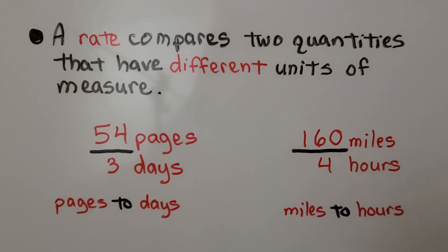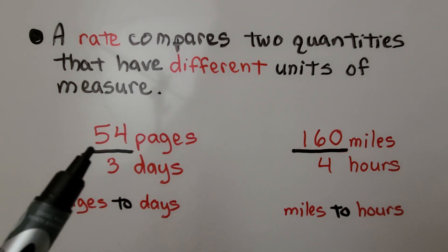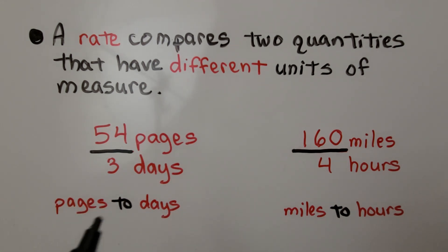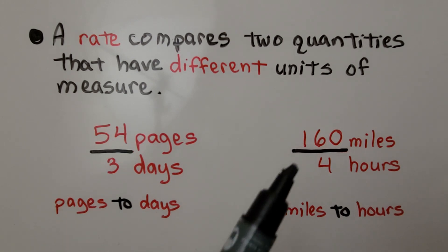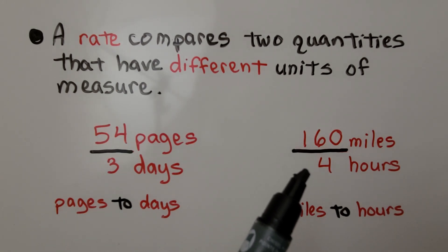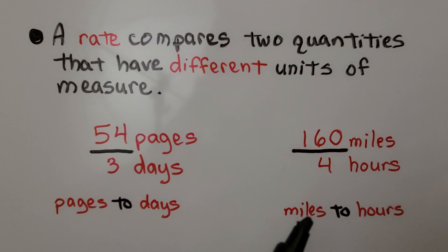A rate compares two quantities that have different units of measure. If we read 54 pages in three days, we're comparing pages to days. Those are different units. And if we drive 160 miles in four hours, we're comparing miles to hours. These are different units. These are rates.